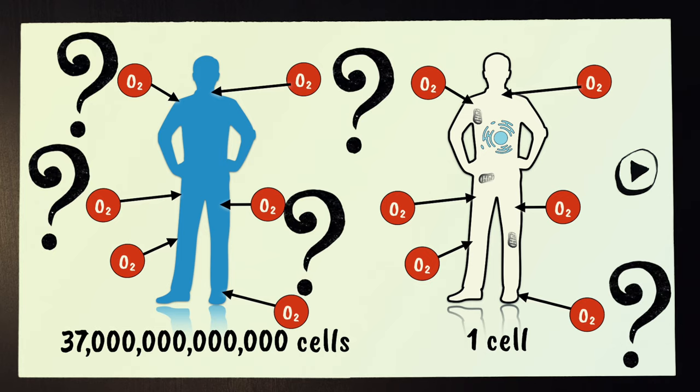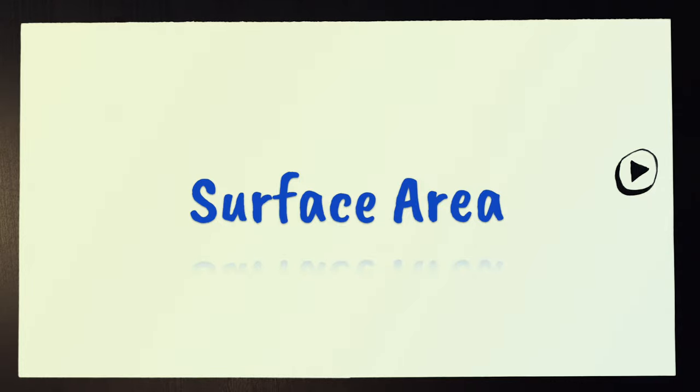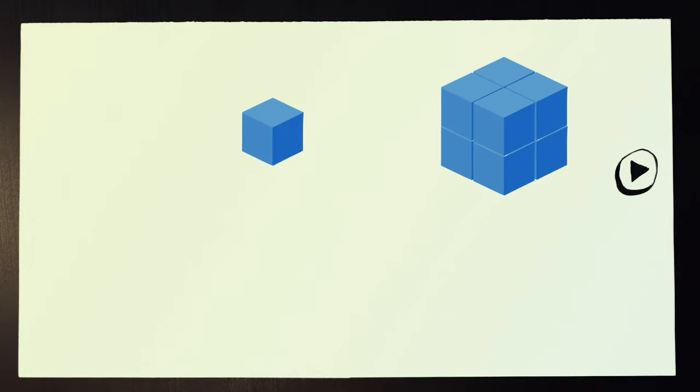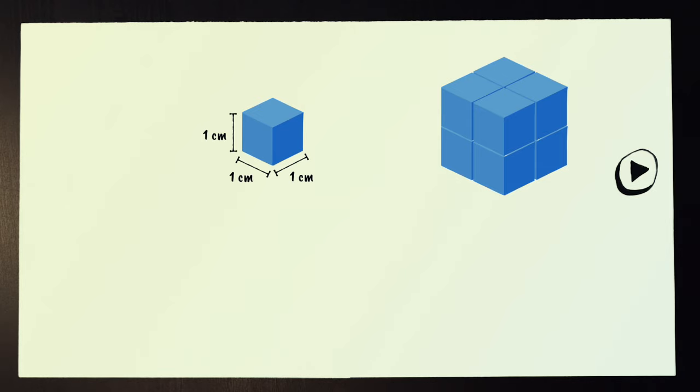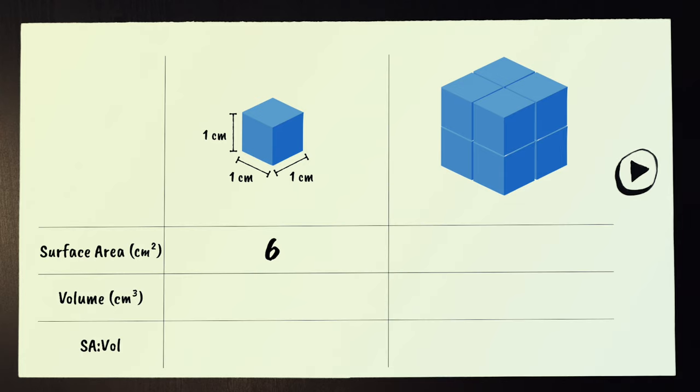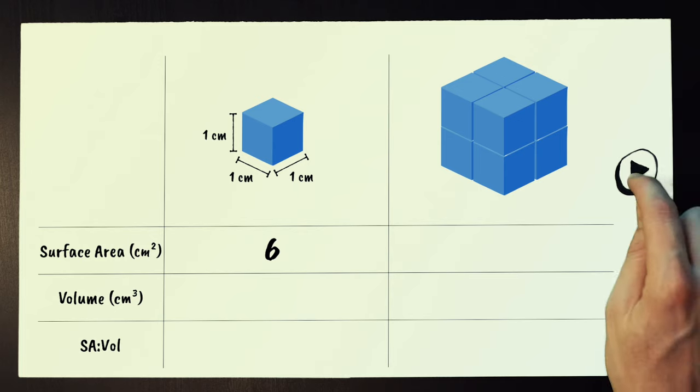Consider two cubes of different sizes. The smallest cube is one centimeter by one centimeter by one centimeter, and so has faces each with an area of one centimeter squared. There are six faces, so it has a total surface area of six centimeters squared.